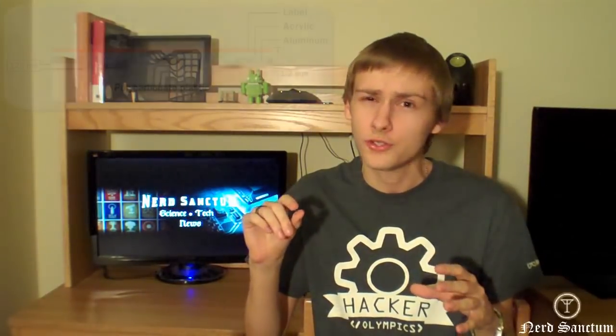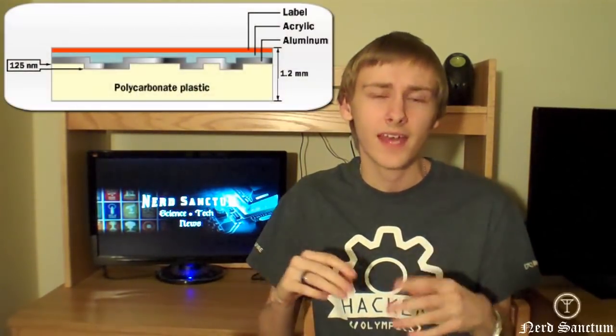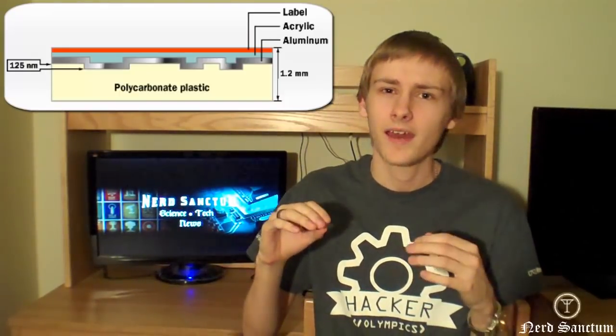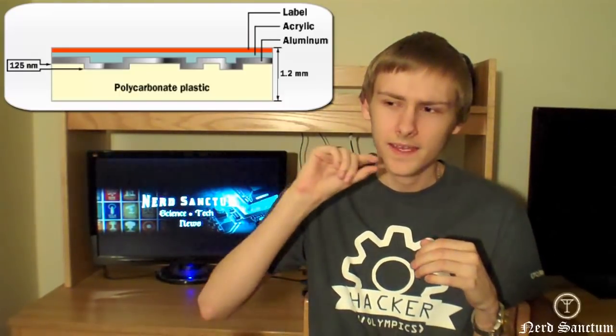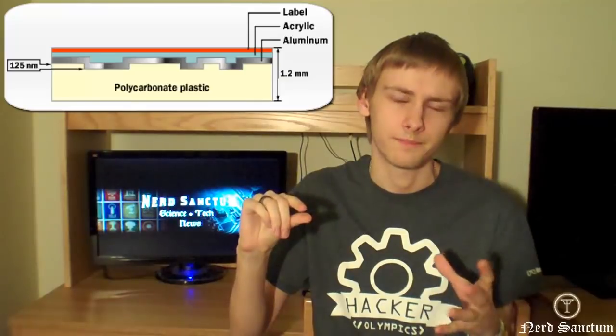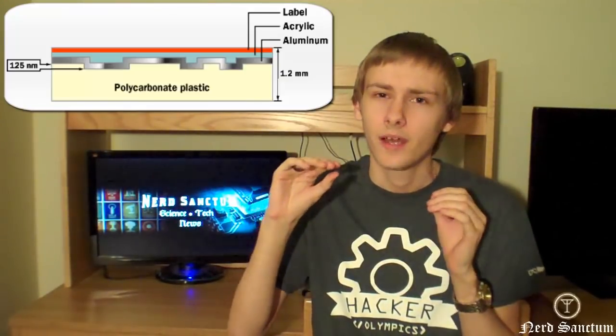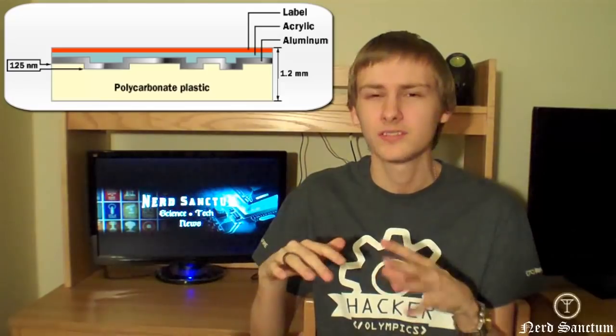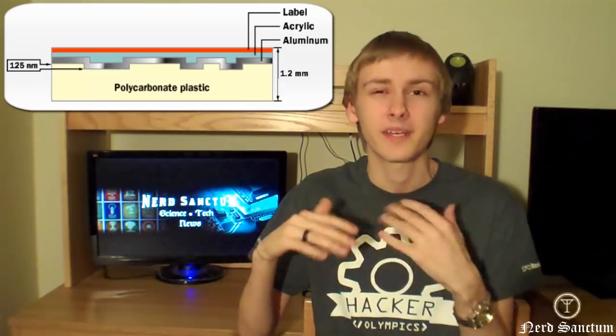Let's jump into the anatomy of how a disc is actually created. Discs are usually 1.2 millimeters thick. Most of that is a polycarbonate plastic, which is a clear substance. Then we have a thin layer of aluminum that's reflective. On top of that we usually put some acrylic solution just to protect the aluminum, and then we have whatever label you put on top.